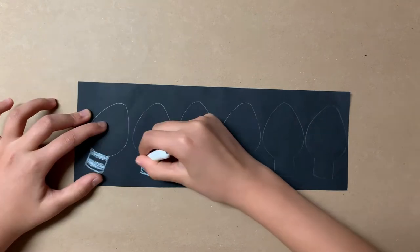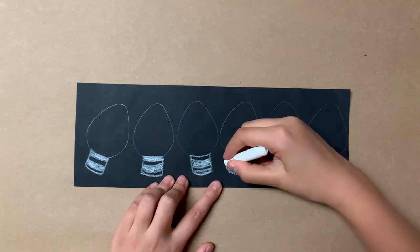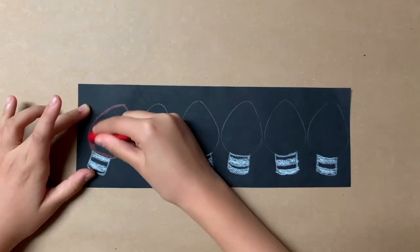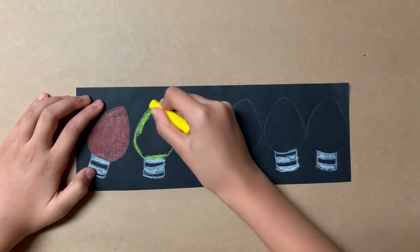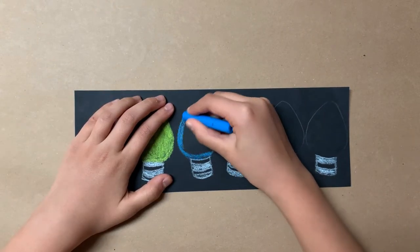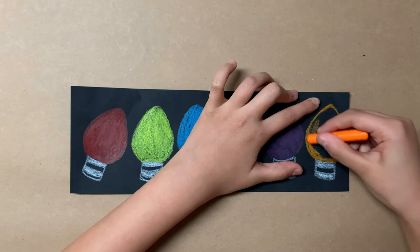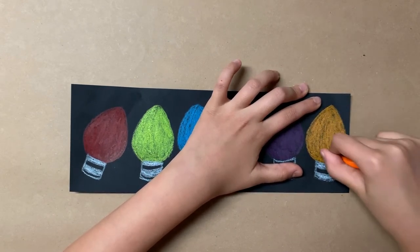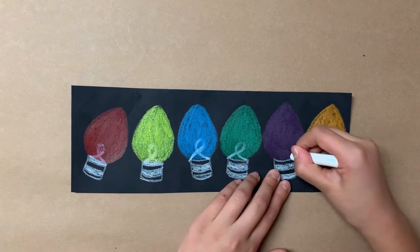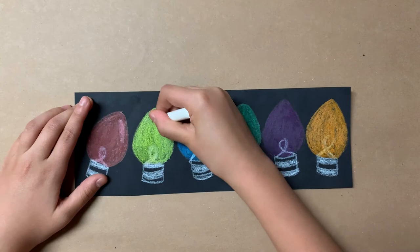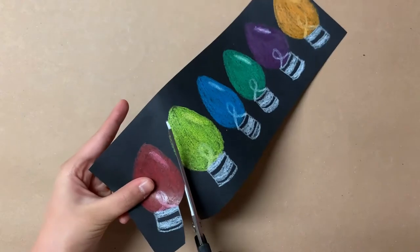Color your bulbs with crayons. You can also draw the coil and glare. They became nice bulbs. Now let's cut them out.